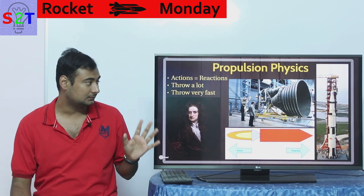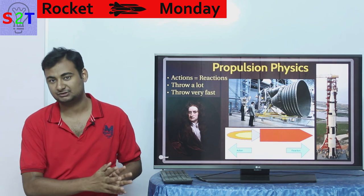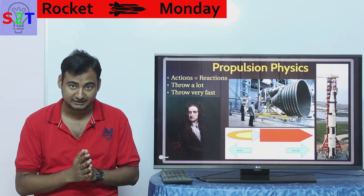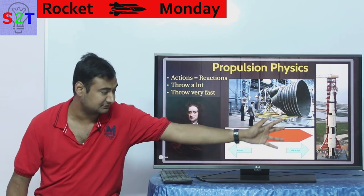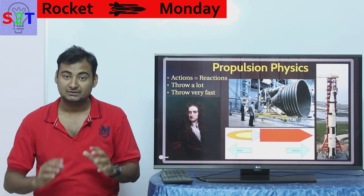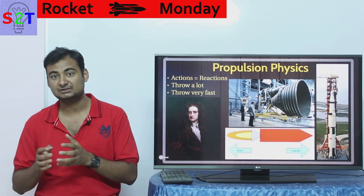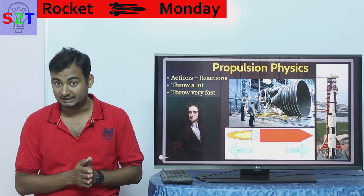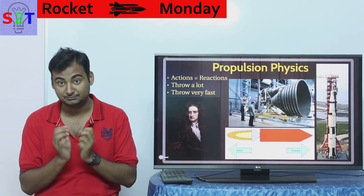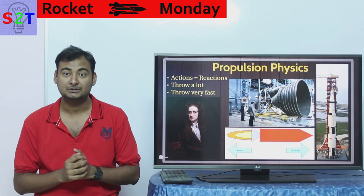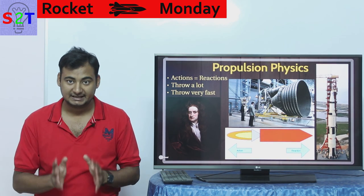Either you throw a lot, or you throw very fast — whatever you are throwing. In this scenario, like what you see in this rocket engine and Saturn V diagram, what you are throwing is molecules. Those molecules you can store either in liquid form like kerosene and liquid oxygen, burn it, and throw it out in gas form — or you can do ions.